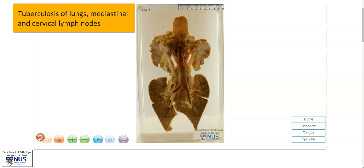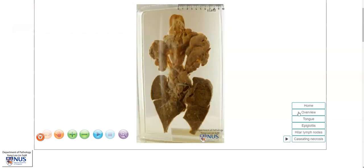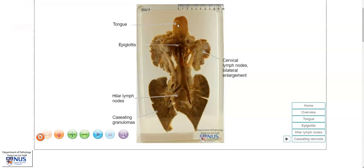Let's have a quick look at the anatomy. This is the tongue. Here is the epiglottis, and we have the larynx here, the trachea, with the main bronchi, the hilar lymph nodes, and both lungs, and we also have very enlarged cervical lymph nodes. The main pathology is seen in the lungs, the hilar and cervical lymph nodes, and let's take a closer look.